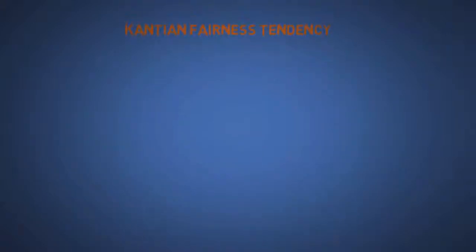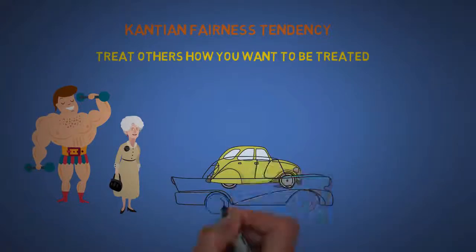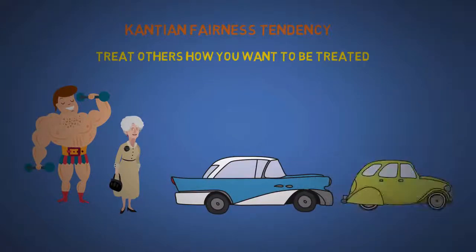The seventh is Kantian fairness tendency, which is pretty much the golden rule. That is to treat others how you want to be treated. It's the bias that makes a 300 pound big guy willing to line up behind an old lady and follow the first come first serve rule. Another example is letting in other drivers on the freeway, believing that they will reciprocate in the future. So think about situations where you get mad at strangers for not sharing, who don't even owe you anything.